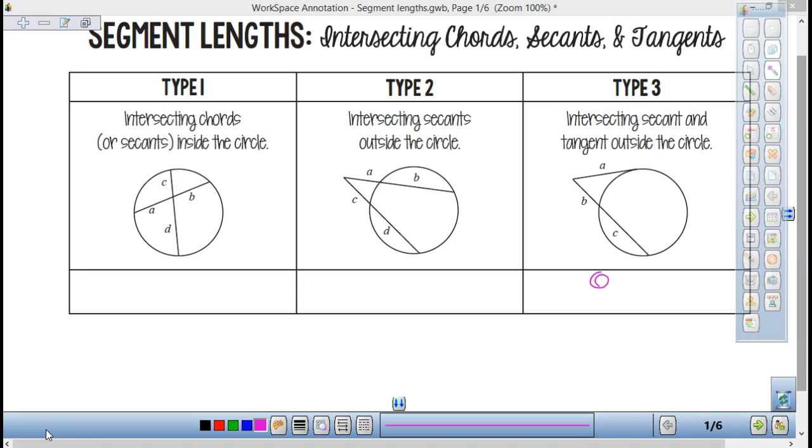If they intersect on the inside of the circle, A times B equals C times D. You multiply the two segments.